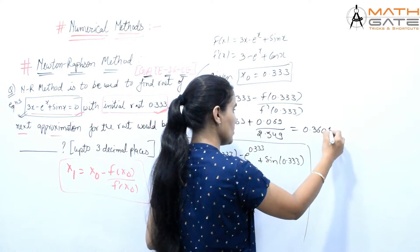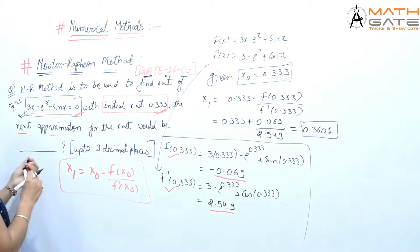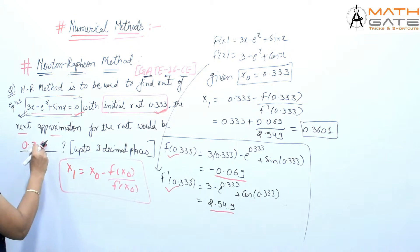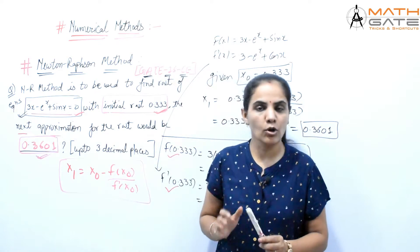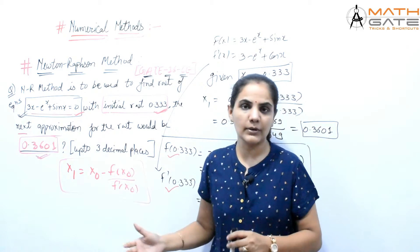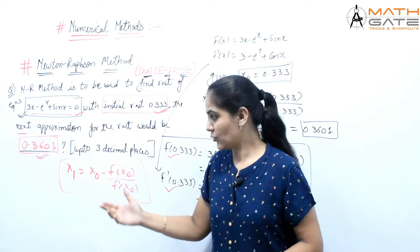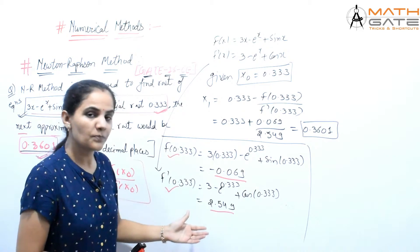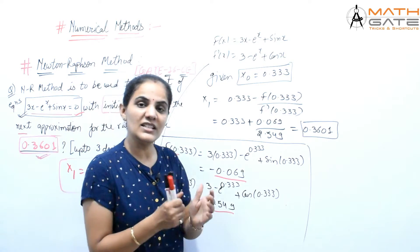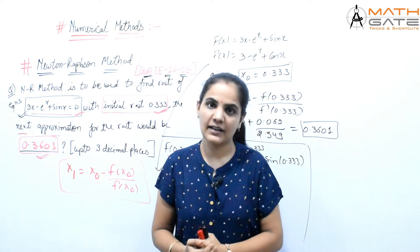Solving this gives x1 = 0.3601, or 0.360 up to three decimal places. This is the application of Newton-Raphson method — a very basic formula to apply. If x2 had been asked instead of x1, we would first find x1 by this process and then compute x2. This is the basic type of question asked in GATE examination.